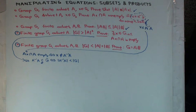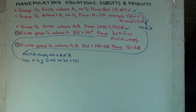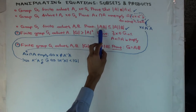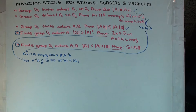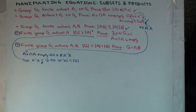Now, how would you actually show this? Which result tells you what the size of this can be? Did we see any result about the size of products of sets? The third one — it says that the size of the product of two sets is less than or equal to the product of the sizes. So the two sets we are concerned with here are A inverse and A.